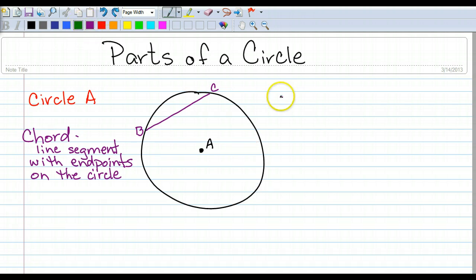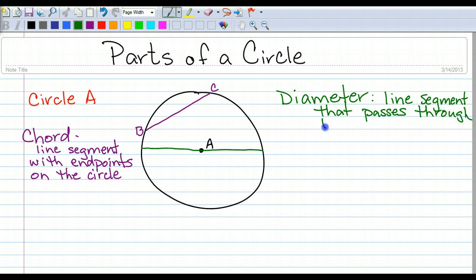Now, it also has what's called a diameter. Now, here's something that's a little tricky. A diameter is actually a chord with a special name. The special name is diameter. Any chord that goes through the center of the circle is called a diameter. So it is a line segment that passes through the center.